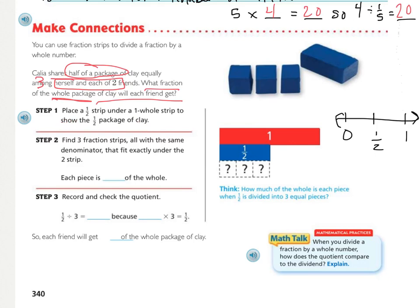So their first step is to place a half a strip under the whole strip to show that we're only using a half a package of clay. So that's this blue piece. Right here on my number line, I just did zero to one, so that's showing my whole piece. And then I divided it in half so that I can have my half a piece right here. And then they say find three fraction strips all with the same denominator that would fit exactly under the two strips. So using the fraction strips, it's kind of a guessing game. But on our number line here,